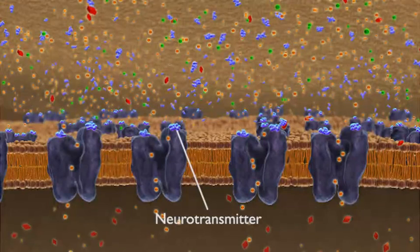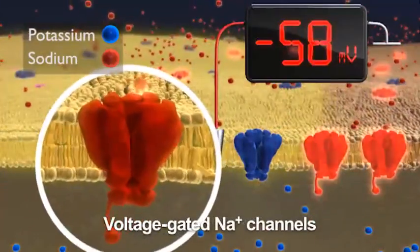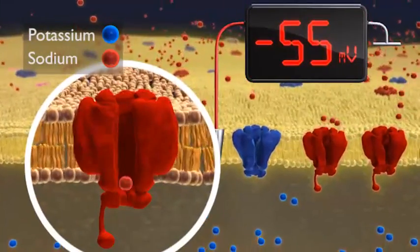In other words, the binding of a neurotransmitter to an ionotropic receptor results in the opening of ion channels across the postsynaptic cell membrane.